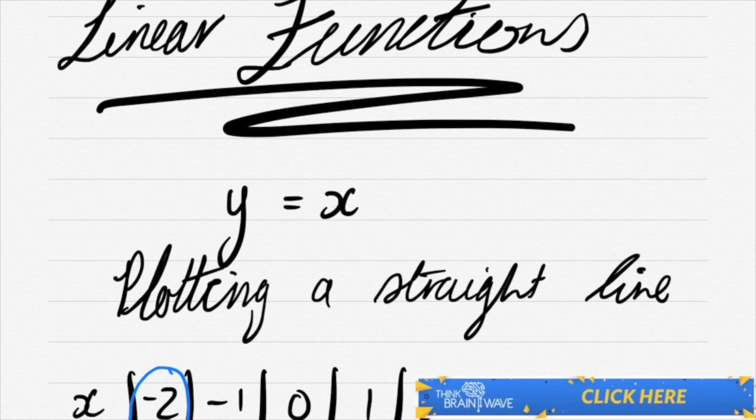Let's talk about linear functions. Over here we have y is equal to x. This is actually a function. So wherever y is, x will be at the same point but on the x-axis.